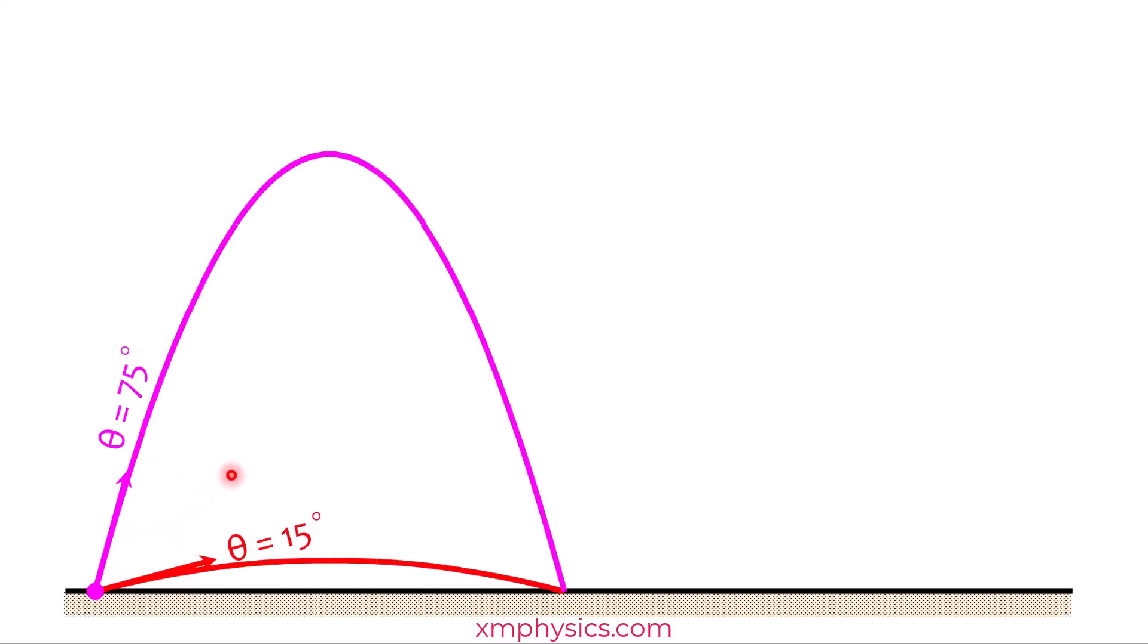So if you want to land furthest away, you must have a just nice horizontal velocity, not too fast, not too slow. And a just nice vertical velocity, not too fast, not too slow, if you want to land furthest away. So guess what the angle is?